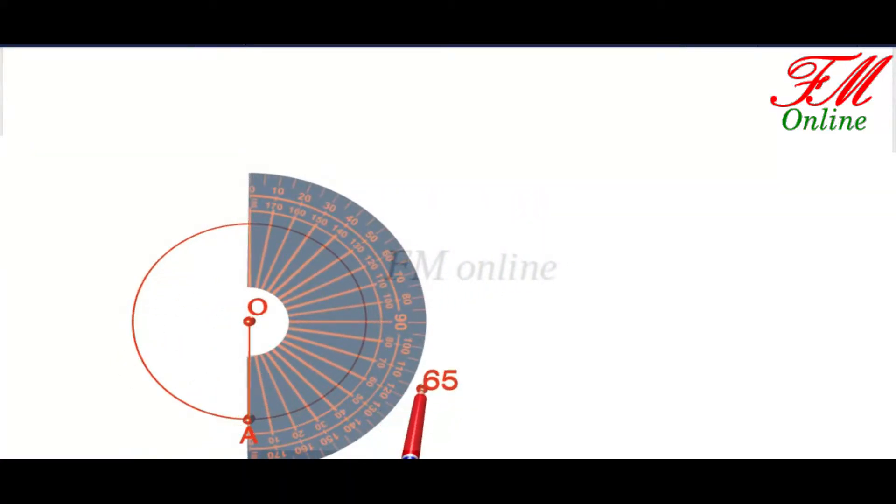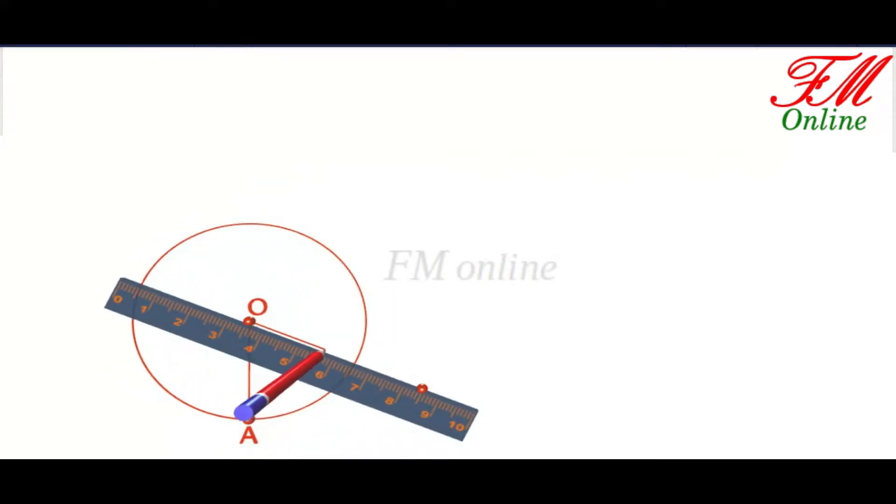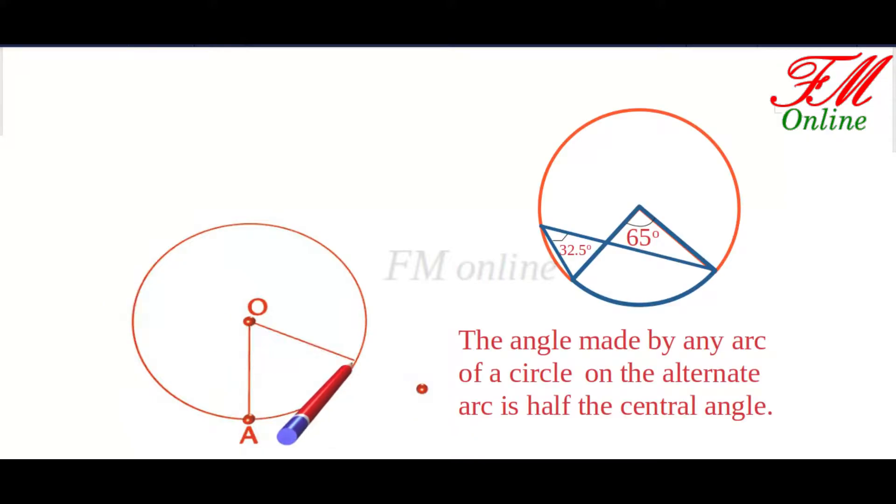Using protractor, mark the central angle of a circle as 65 degrees so that the angle on the remaining part of the circle will be its half, that is 32.5 degrees.